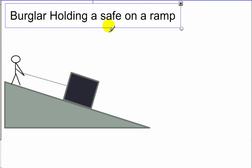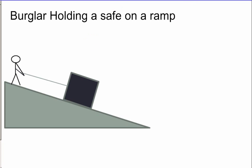This one has some interesting ideas to it. So we have a burglar holding a safe on a ramp. So let's draw a system boundary. Okay. I'm going to draw a dotted line around just the safe, trying not to include anything else. Alright. Then we're going to take that system and condense it to a single point and think about the forces that act on the system.